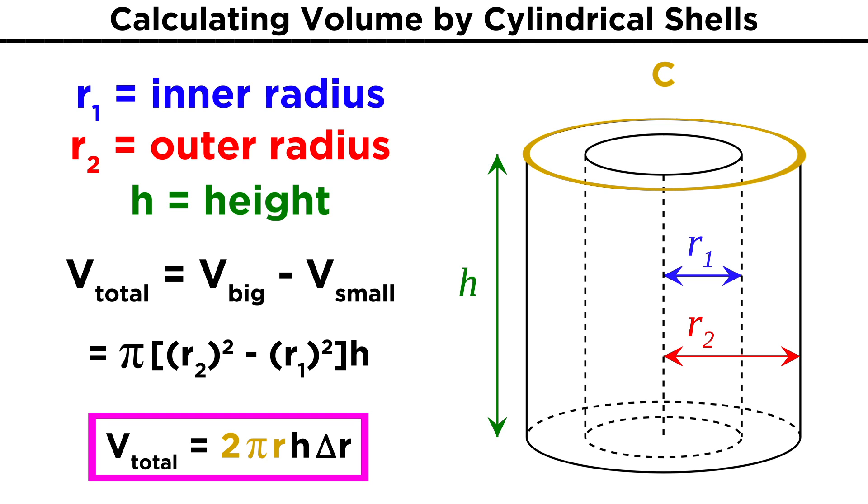One easy way to remember this is to see that two pi R is the same as the circumference of the cylinder, so this is really just circumference times height times thickness.